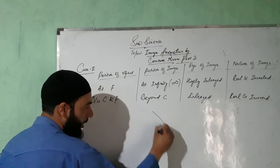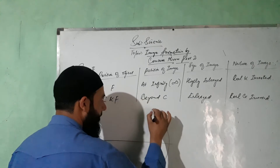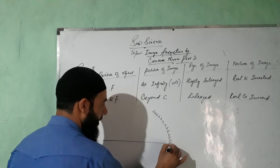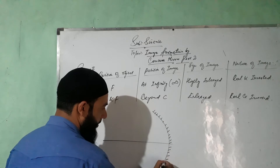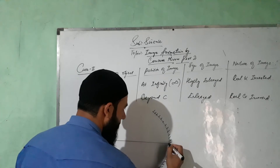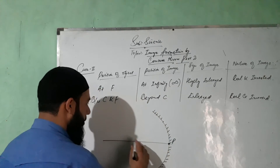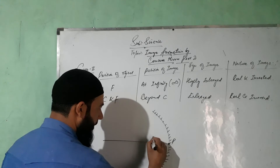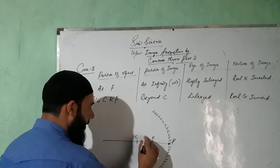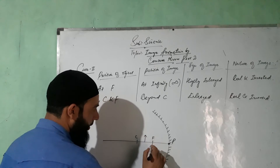So this is the mirror, this is the principal axis, this is the pole, this is F, and this is C. If the object is between C and F — here is the setup for the ray diagram.